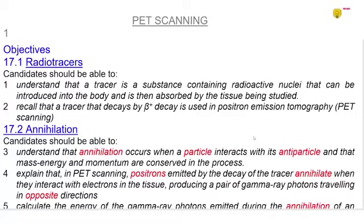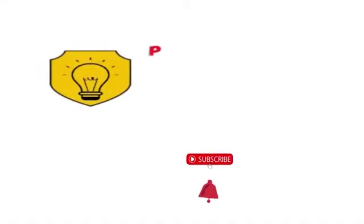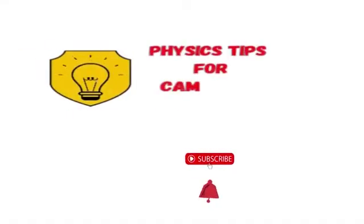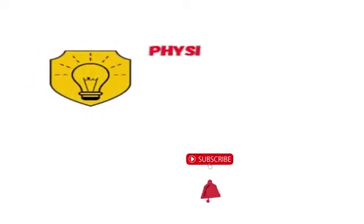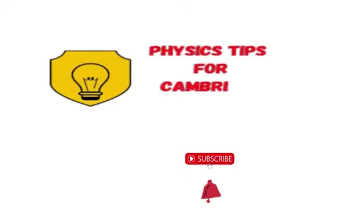In this video we are going to look at PET scanning and in PET scanning we talk about radiotracers and annihilation as well as how to detect gamma radiation. Remember to subscribe to the Physics Tips for Cambridge Students YouTube channel and hit the bell notification so that you get alerted to future videos. Without much further ado, let's get started.